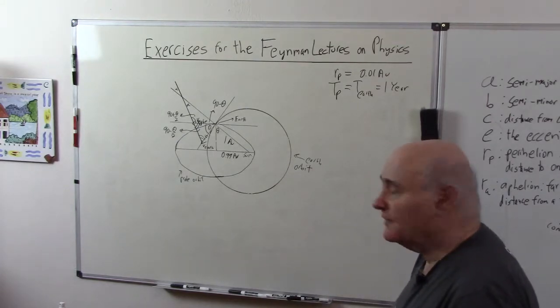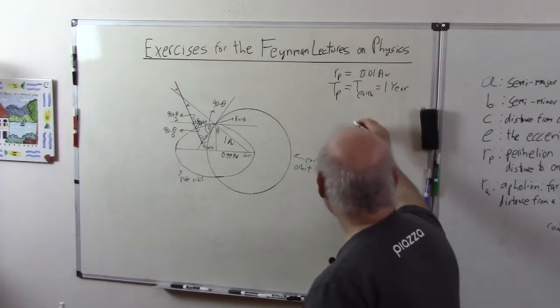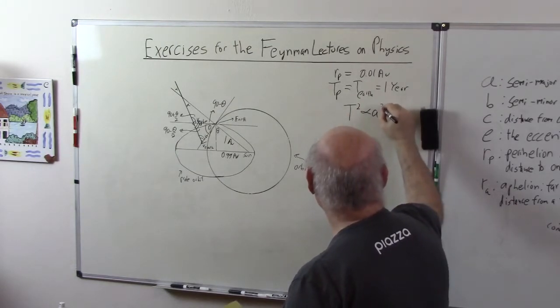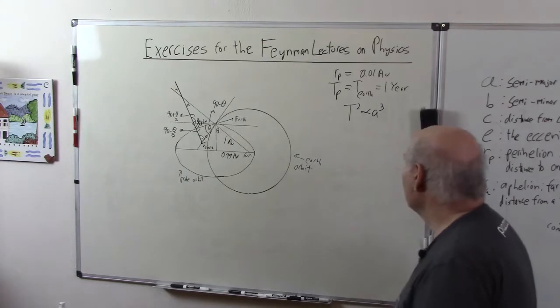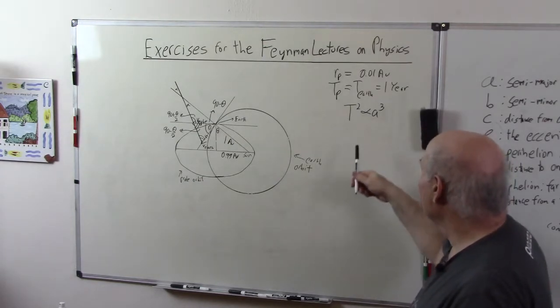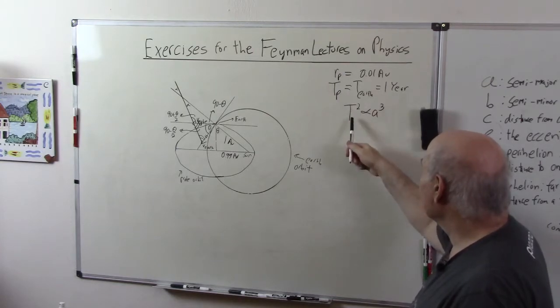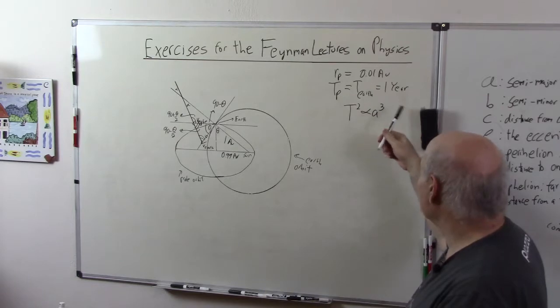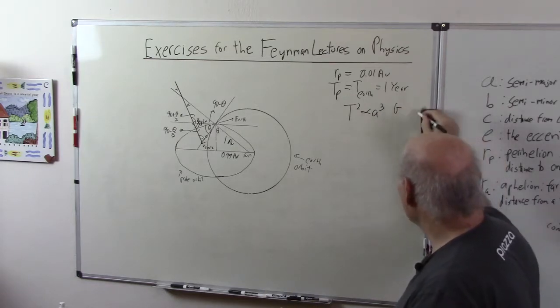This is the key to the problem. If you remember in the previous problem I wrote down Kepler's third law which basically says T squared is proportional to A cubed. Now here's the interesting thing. We're working around the sun. If the period of the probe is equal to the period of the Earth and the proportionality constant only involves gravity, gravitational constant and the mass of the sun.